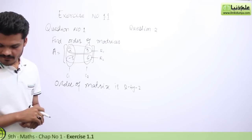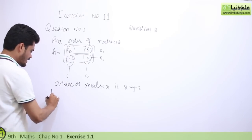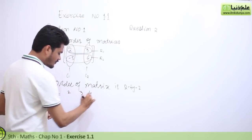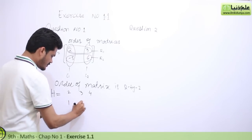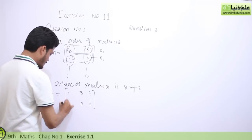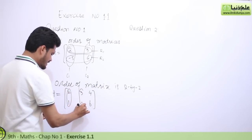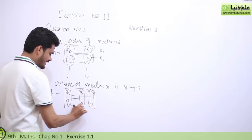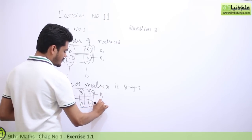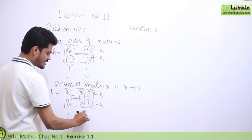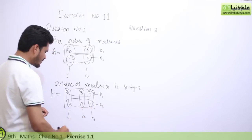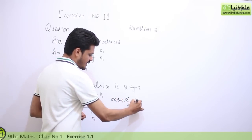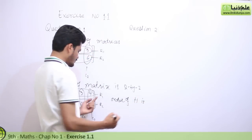Let me try part H, the last part. Matrix H has entries 2, 3, 4, 1, 0, 6. This is the first column, second column, third column. Similarly, this is the first row and this is the second row. So the order of matrix H is 2 by 3.